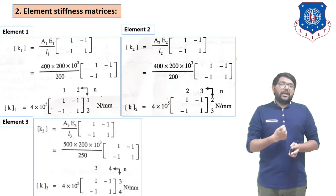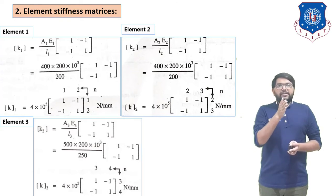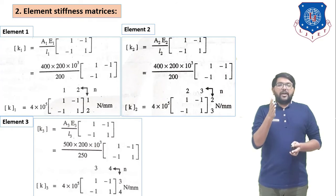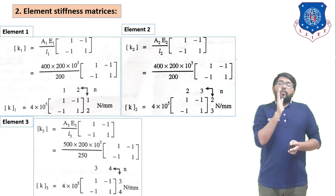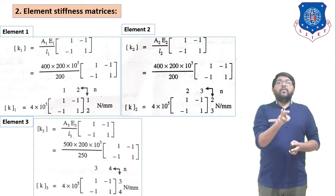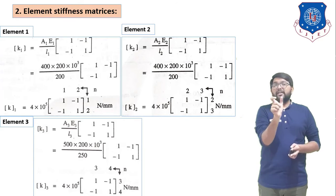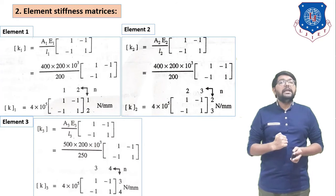For element 3: K3 = (A3·E)/L3 × [1, -1; -1, 1]. Substituting A3 = 500, E = 200 × 10³, L3 = 250, we get K3 = 4 × 10⁵ × [1, -1; -1, 1], with row and column numbers 3, 4. Note: whatever common value is taken in the first element stiffness matrix — 4 × 10⁵ — the same value must be factored out in all three element stiffness matrices.